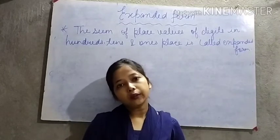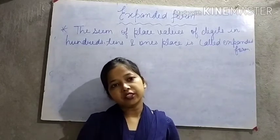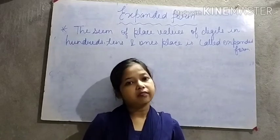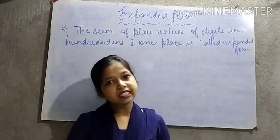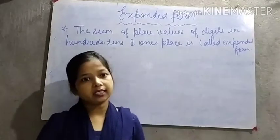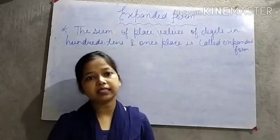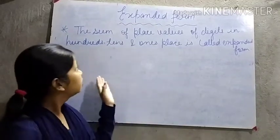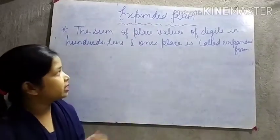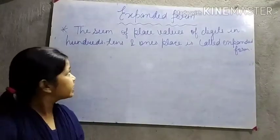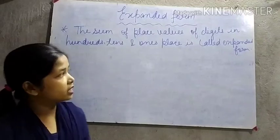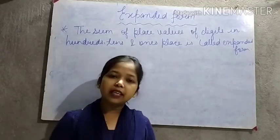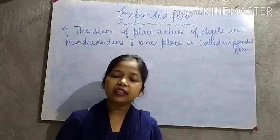At first, let me tell you what we mean by expanded form. The sum of place values of digits in the hundreds, tens, and ones place is called expanded form. I have written this here: the sum of place values of digits in hundreds, tens, and ones place is called expanded form.